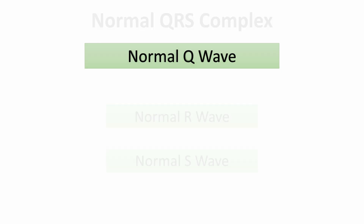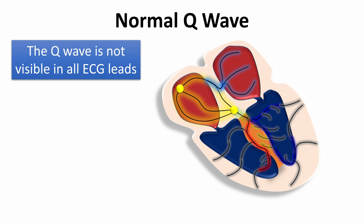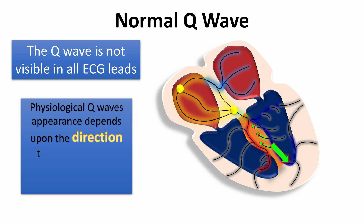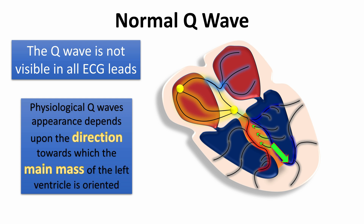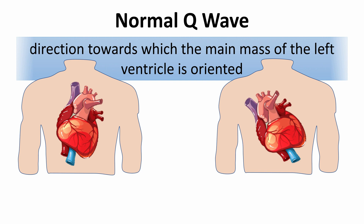The Q wave is not visible in all ECG leads. Physiological Q waves may be observed in leads L1, AVL, V5, and V6, where they represent initial activation of the interventricular septum in a direction opposite to the direction of activation of the main left ventricular mass. The leads in which physiological Q waves appear depends upon the direction towards which the main mass of the left ventricle is oriented.